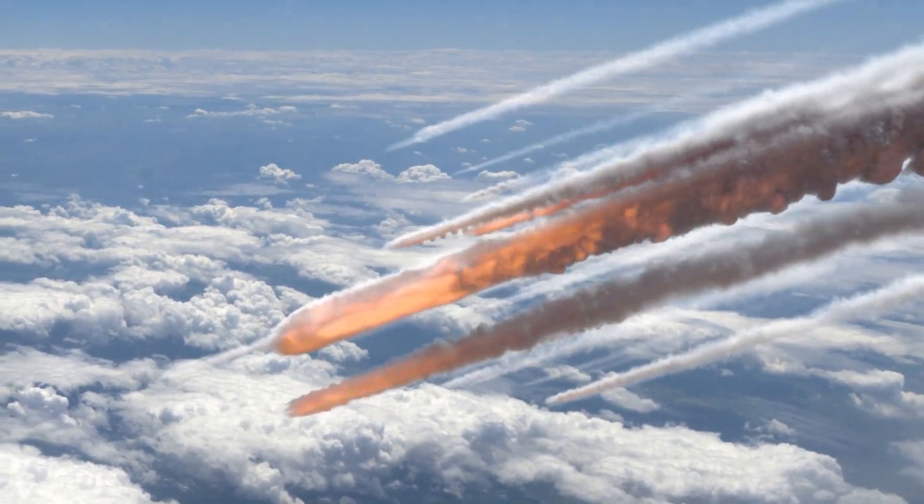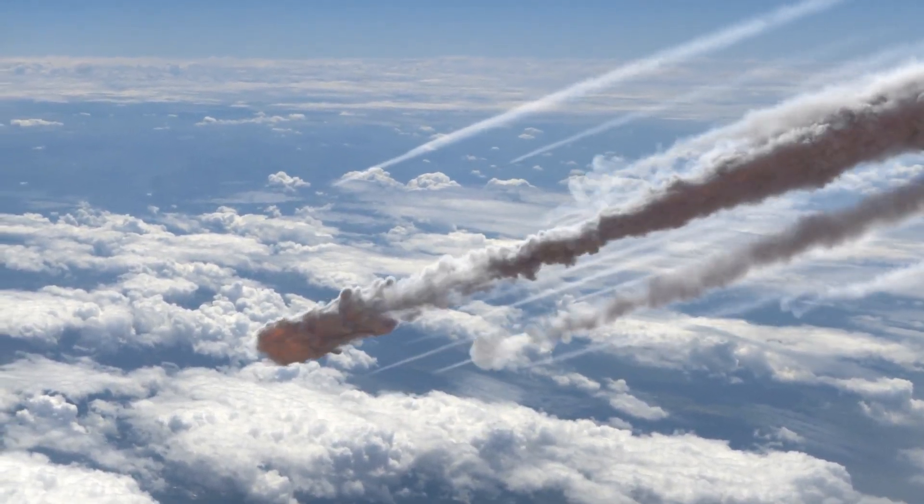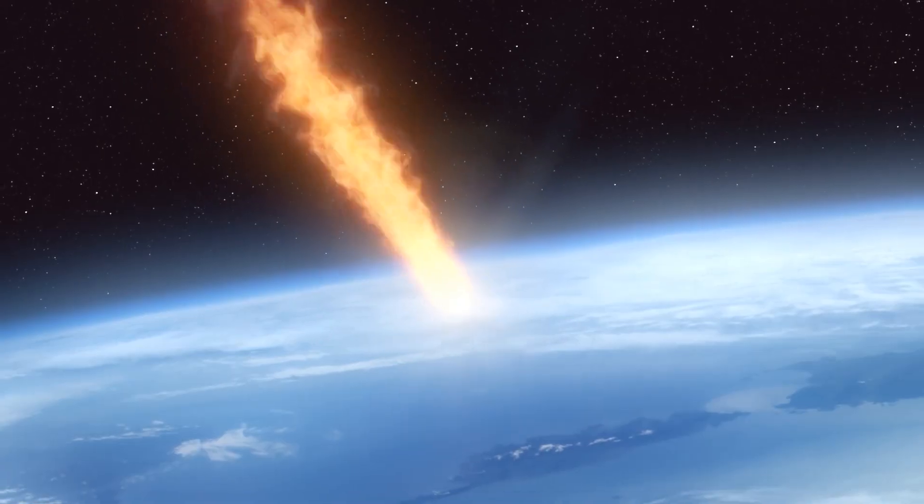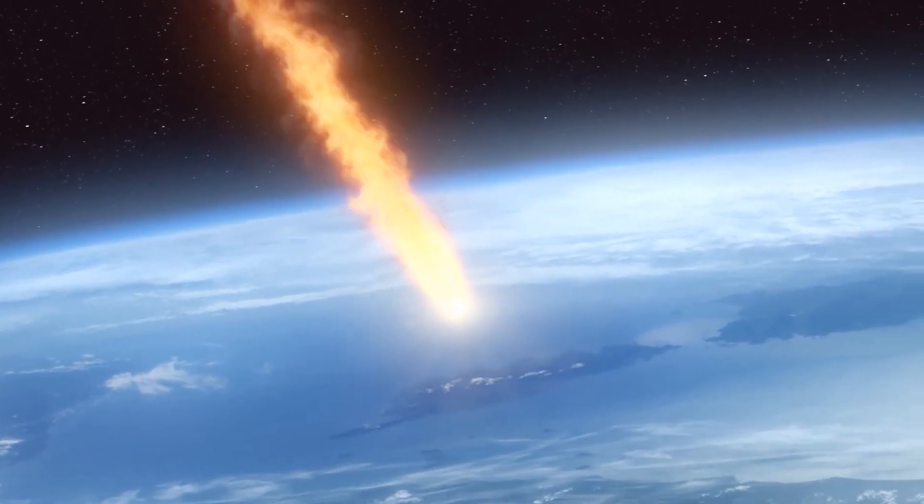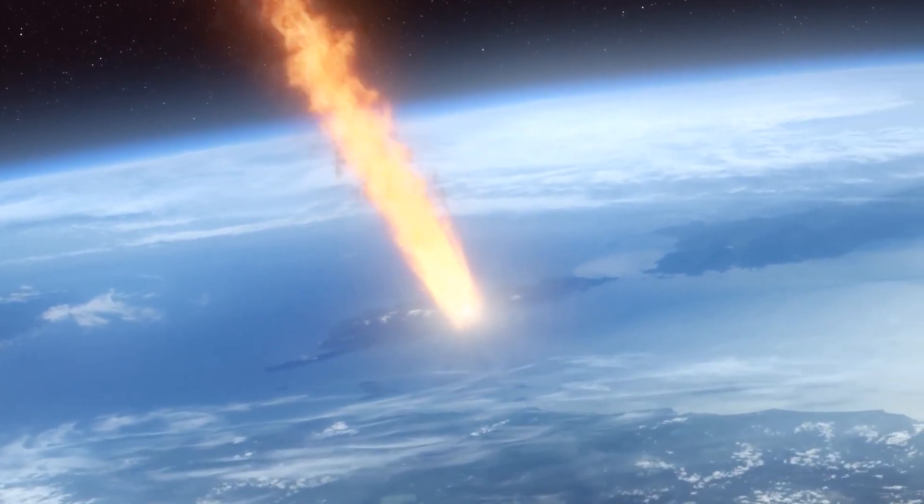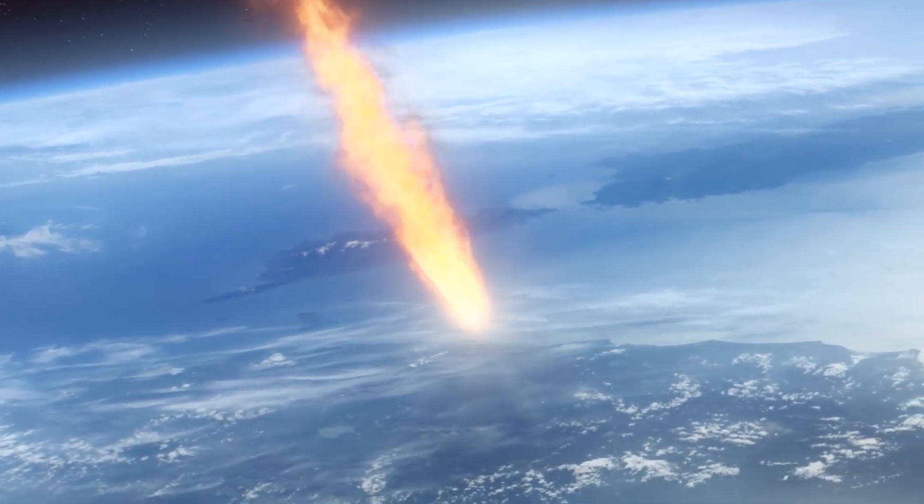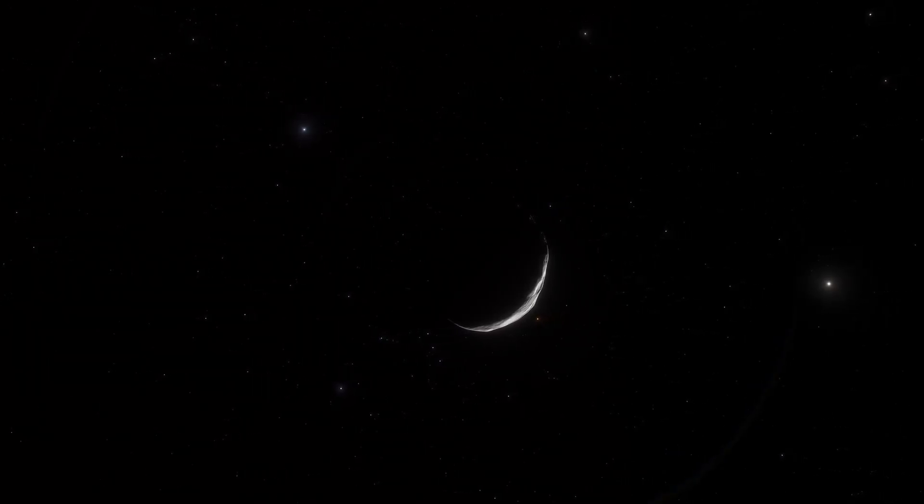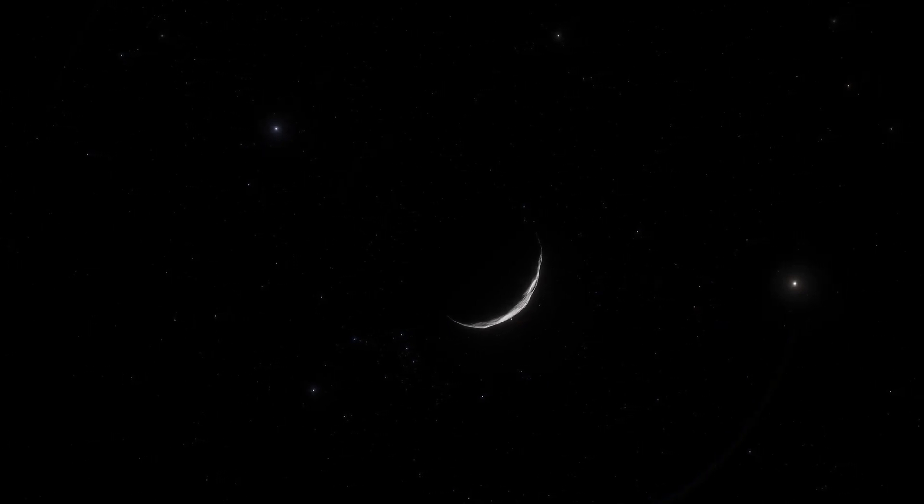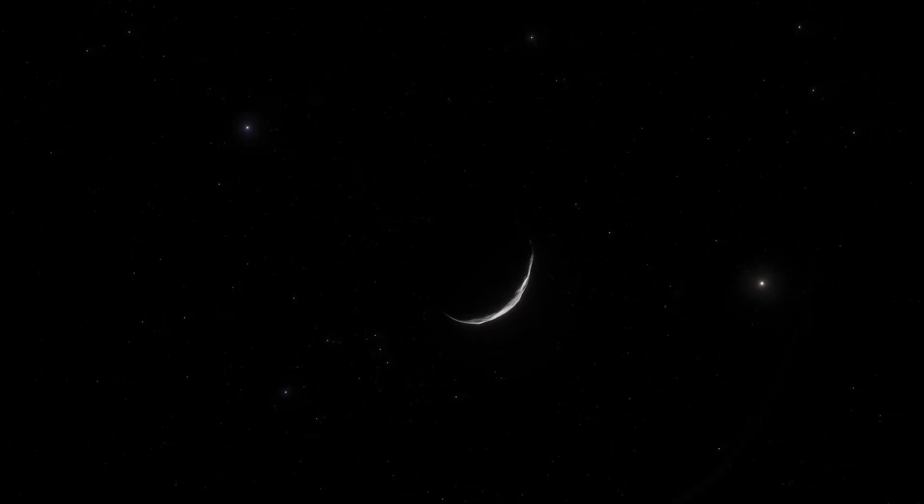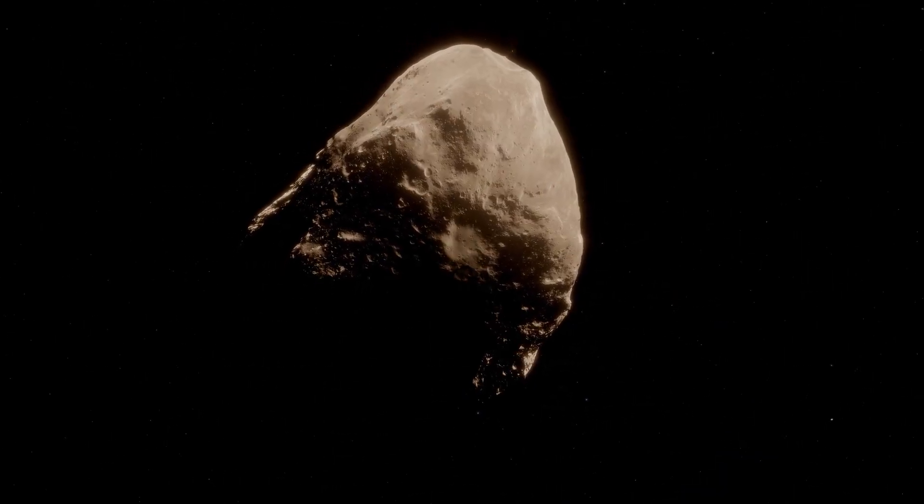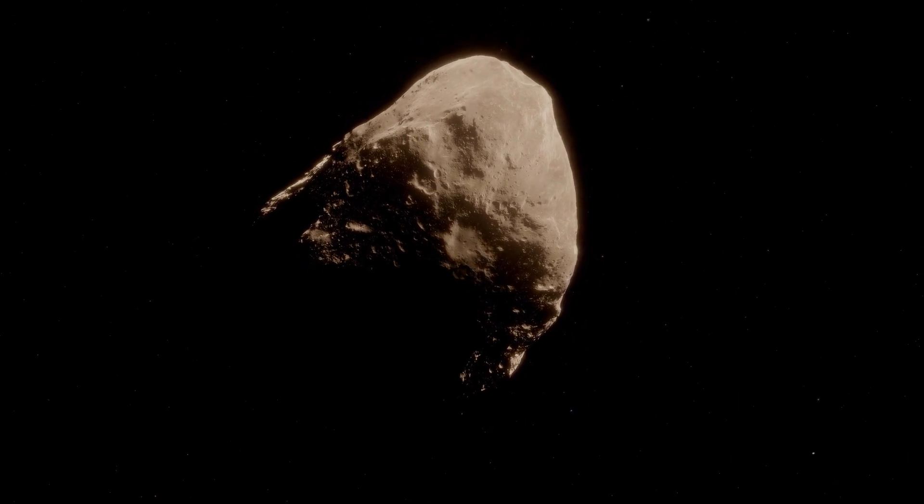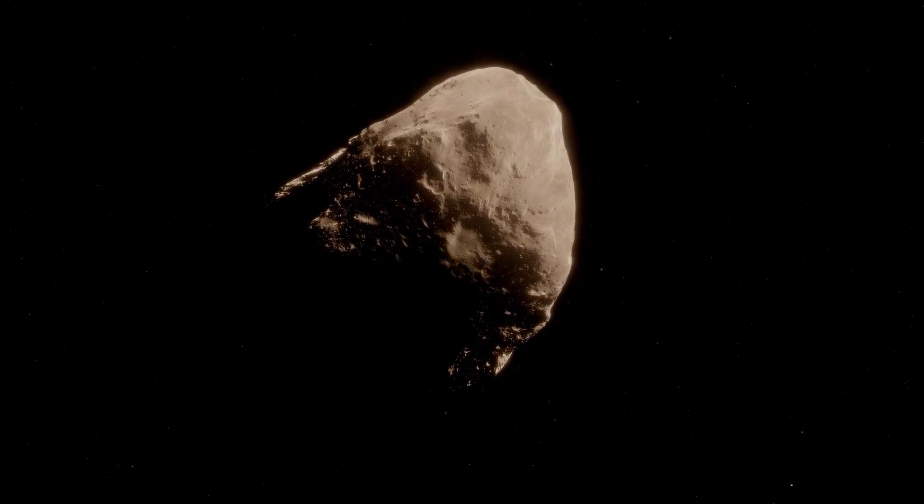Scientists are fairly certain that Tsuchinshan-ATLAS will not collide with Earth. If this comet were on a collision course, Tsuchinshan-ATLAS would have the potential to wipe out a city the size of New York or Beijing. Comets are mostly frozen water and some dust. But as projectiles entering the Earth's atmosphere at incredible speeds, comets are just as dangerous as asteroids, which are composed of solid rock and metals.